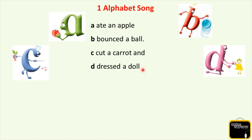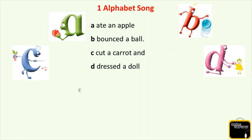Now look at the picture. What is A doing? Yes, A is eating an apple. And show me where is B? Here it is. He is bouncing a ball, he is playing with it. And what is C doing? C is cutting carrots. And D is dressing his doll and playing with it.